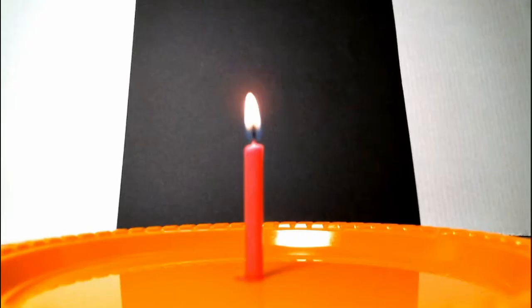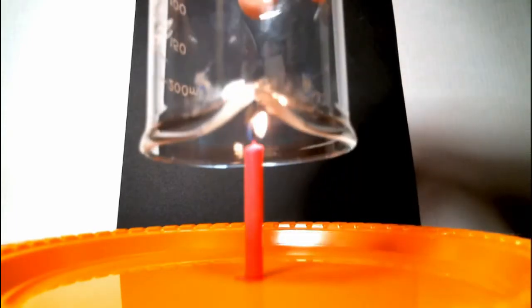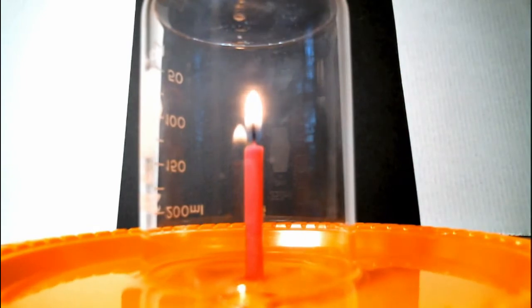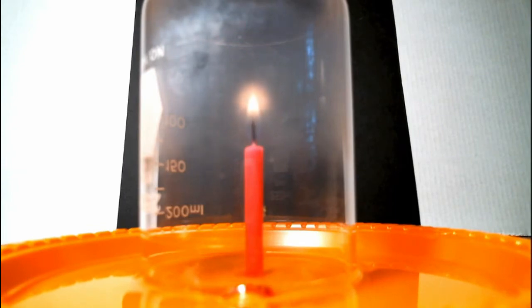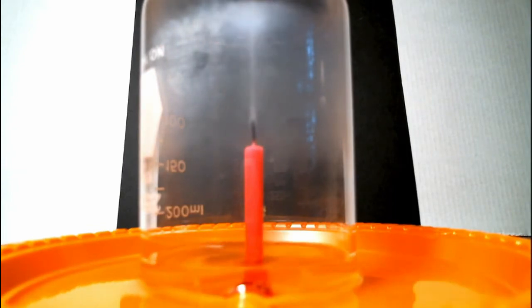Now let's take a look and see what happens if I limit the amount of oxygen available for the combustion process. What I have is the candle sitting in a tray of water. I'm going to place a beaker over it. The water seals the beaker. The combustion process consumes the oxygen in the beaker and eventually that oxygen is consumed and the combustion process ceases.